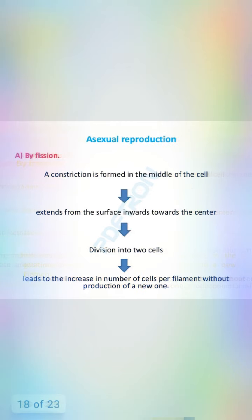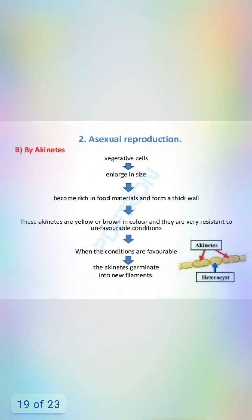Asexual reproduction by fission: a constriction is formed in the middle of the cell, extending from the surface inward towards the center, dividing the cell into two. This increases the number of cells, performing multiplication without producing a new organism. Asexual reproduction by akinetes is also discussed.